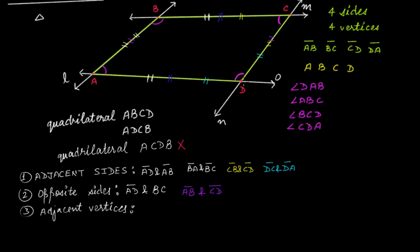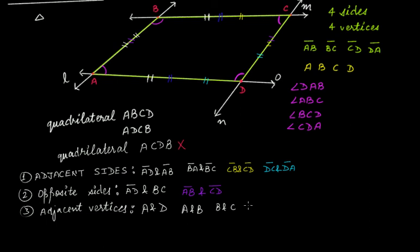If we take side AD, then its endpoints A and D are adjacent vertices. Similarly, A and B are adjacent vertices, B and C are adjacent vertices, and C and D are adjacent vertices.